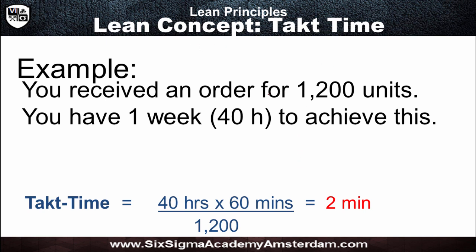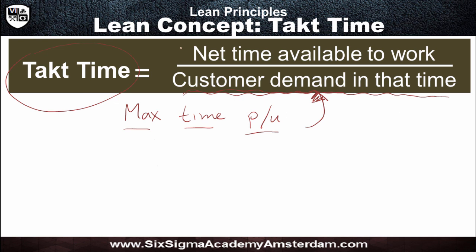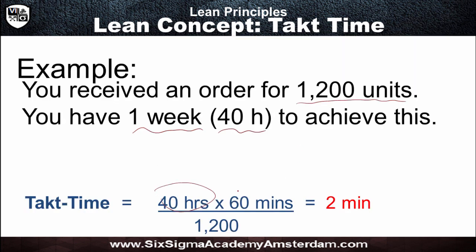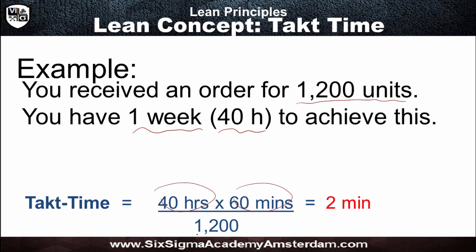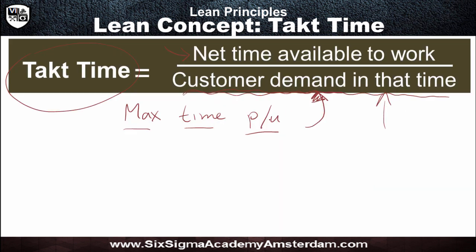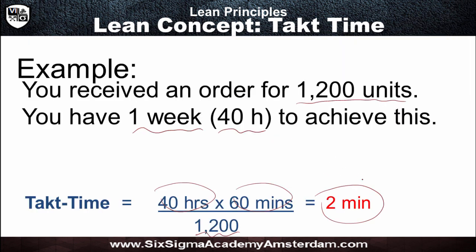An example will make it clear. You received an order of 1200 units — maybe some kind of a cupcake — and you have a week which consists of 40 hours to achieve this. What is your takt time? Net time available to work is 40 hours times 60 minutes, divided by customer demand of 1200 units, which gives us a takt time of two minutes. In other words, you have a maximum of two minutes per cupcake to deliver these 1200 units within this week.